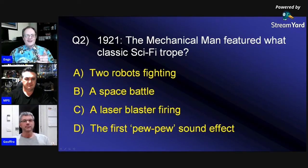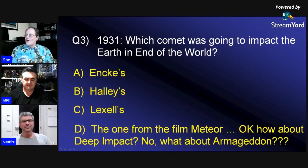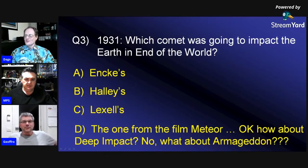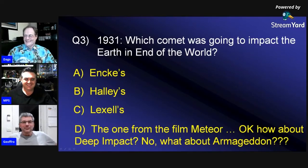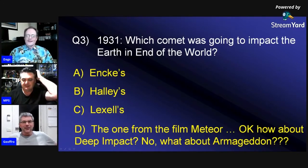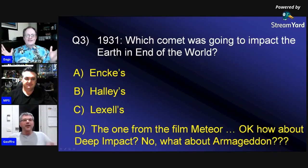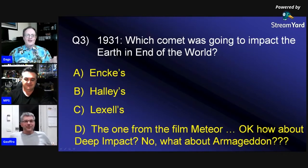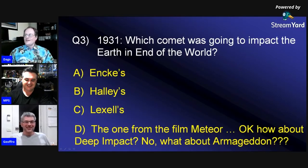It's 1931. Which comet was going to impact the Earth in End of the World? Was it A, Incas; B, Halley's; C, Lexell's; or D, the one from the film Meteor, or Deep Impact, or Armageddon? For something different, I'm going to go A. I'm going to go C — I don't think it's Halley's Comet, that just seems too obvious. Jeff apparently has the silent audio tape version of that 1911 movie, which is kind of cool.